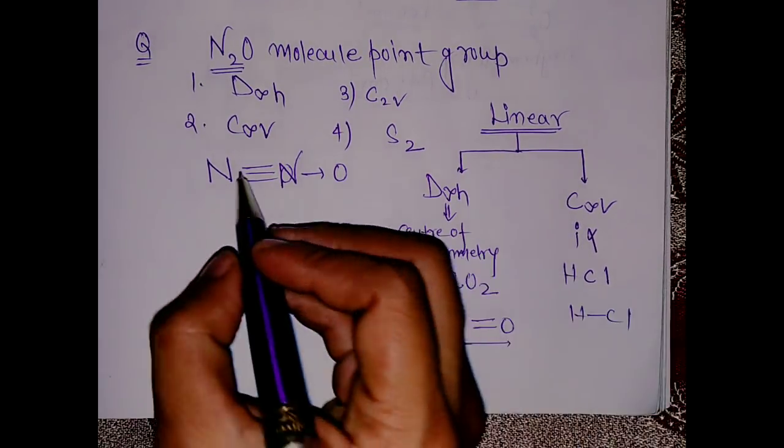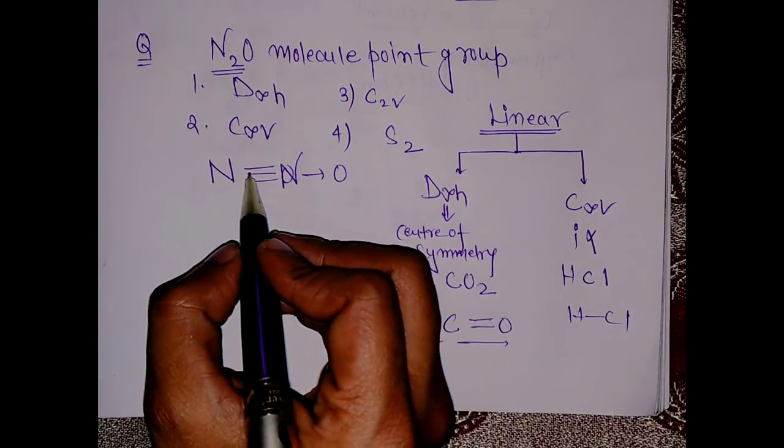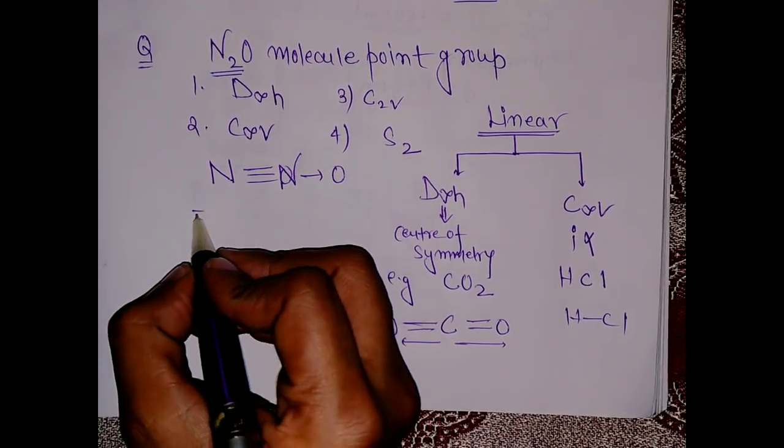Same goes here. This is a linear molecule but there is no center of symmetry. That means the point group is C∞v. It is a very easy question.